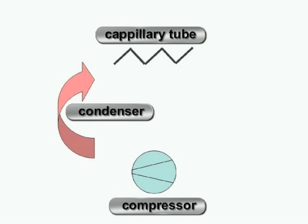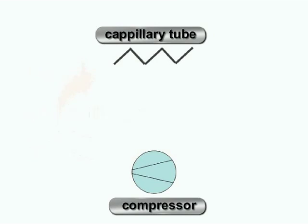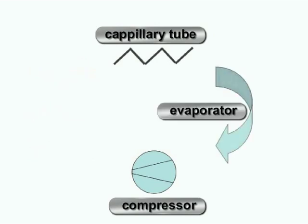During the compression, heat is produced, which is transferred to the environment through the surface of the condenser. The refrigerant is gradually liquefied by the heat emission. The completely liquefied refrigerant is now outside the capillary tube. It enters the evaporator where a lower pressure prevails. The liquid refrigerant is now evaporating, and during this process the heat is extracted from the cooling compartment.